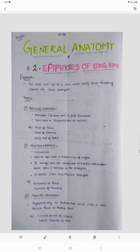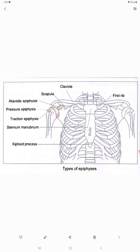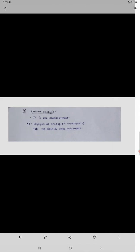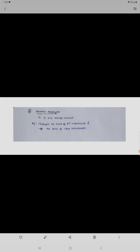In this picture, we can see the pressure epiphyses — the head of the humerus — and the atavistic type of epiphyses — the coracoid process of scapula — and the traction epiphyses, here the tubercle of the humerus. Coming to the fourth type, that is aberrant epiphyses — you should note that aberrant epiphyses are not always present. The examples are epiphyses at the head of the first metacarpal and base of other metacarpals.